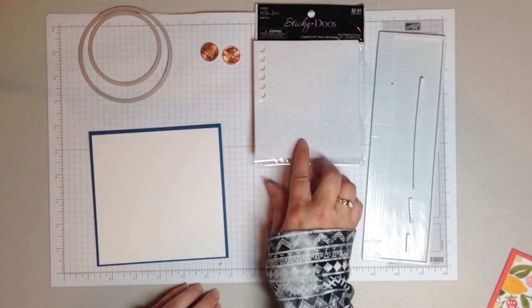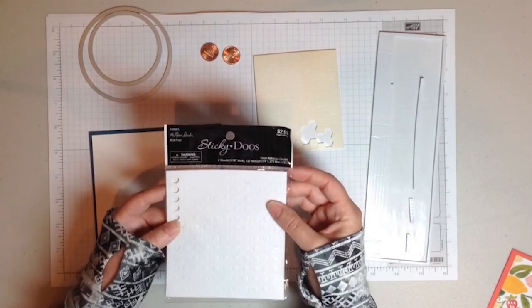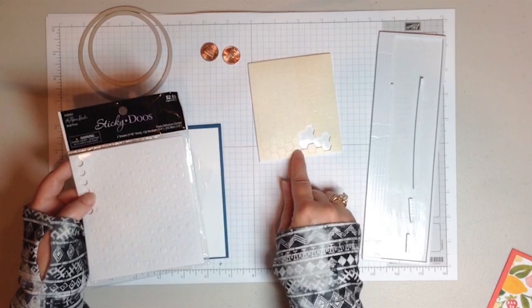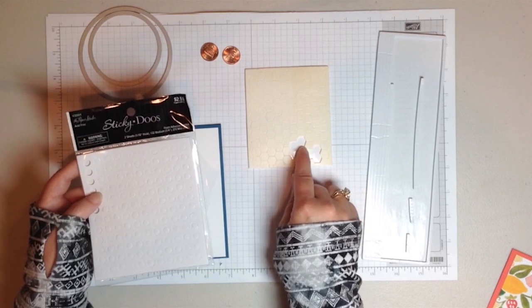Other things that you need are sticky dots. You can find different ones at the store or use Stamping Up dimensionals. Now I found that if I use these, these have little points and those need to be trimmed.